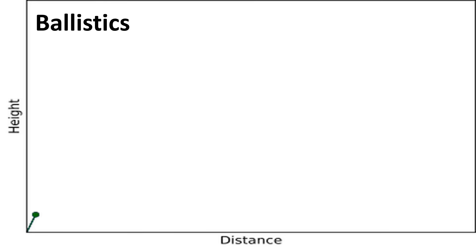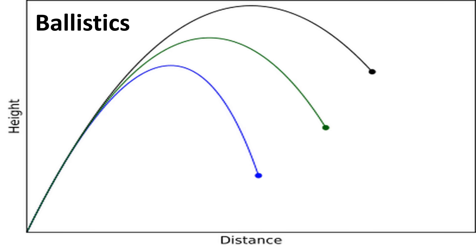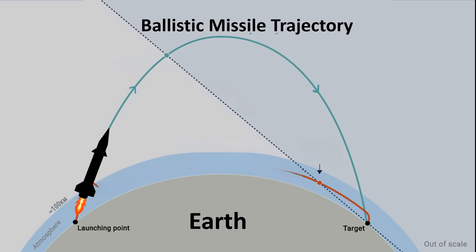An interesting property of this path is that the maximum height increases as the distance increases. So the farther we want to throw the ball, the higher it will naturally go. The more time it spends in the air, the more time it has to travel farther horizontally. A ballistic missile follows the same parabolic path.